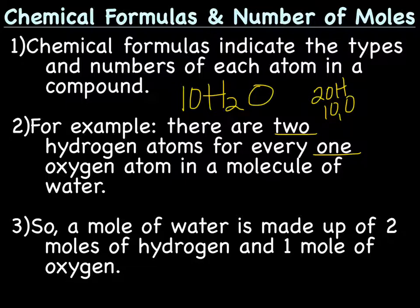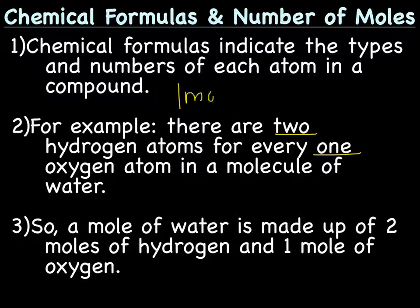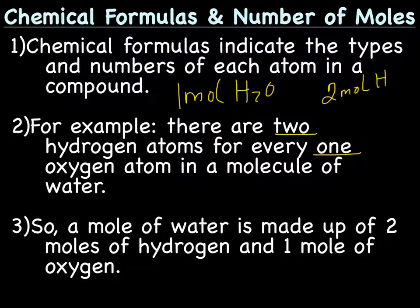that means I would end up with twenty hydrogens and ten oxygens. You could take that further and say if I had one mole of water, keeping in mind that that's 6.022 times 10 to the 23rd, that would mean I would have two moles of hydrogen and one mole of oxygen.